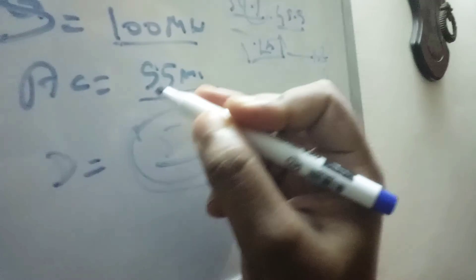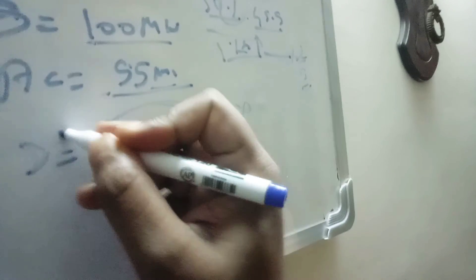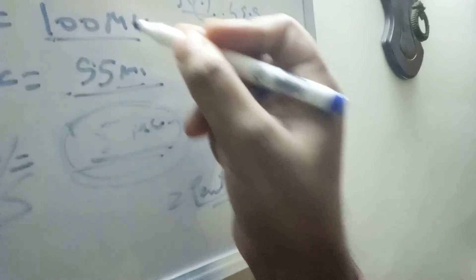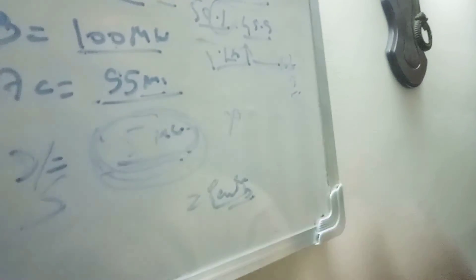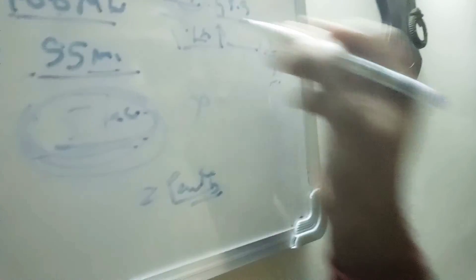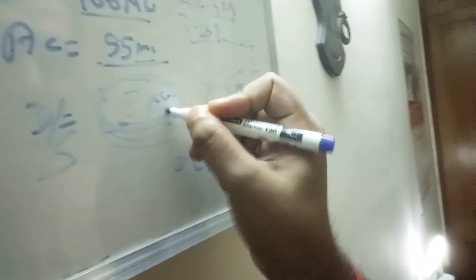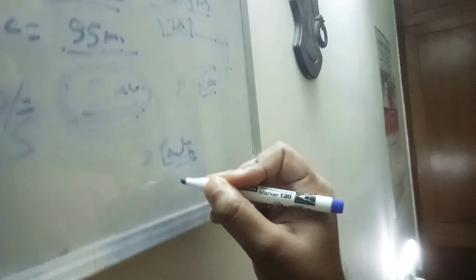Similarly, if you scheduled 100 MW but generated 105 MW, the 5 MW surplus is multiplied by the DSM rate applicable for that time period. The DSM rate is set by the Regional Power Committee based on frequency. That amount is credited to your account. So the DSM rate is derived from the frequency during that specific time block.